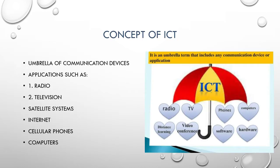ICT is just like an umbrella, with different communication devices and applications like radio, TV, and cell phone. The ICT sector basically means that various equipment can be made available in different types of applications, so you can use it efficiently. ICT is a technique that uses communication resources and provides information.